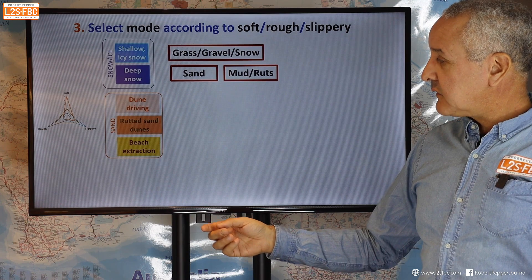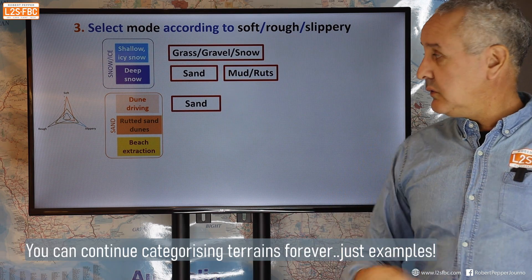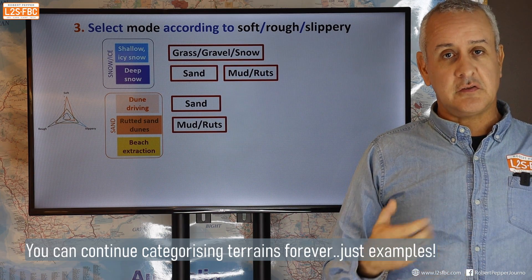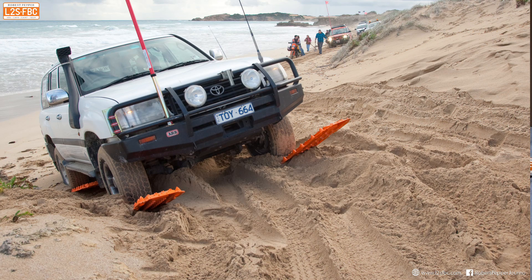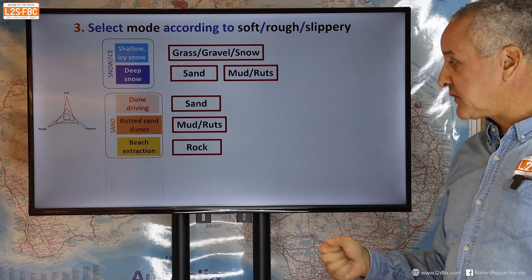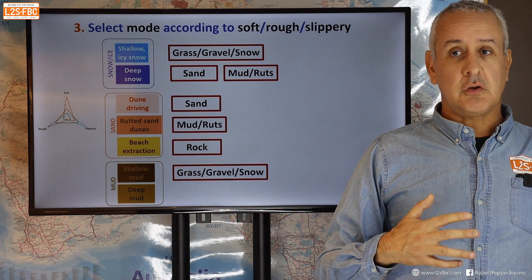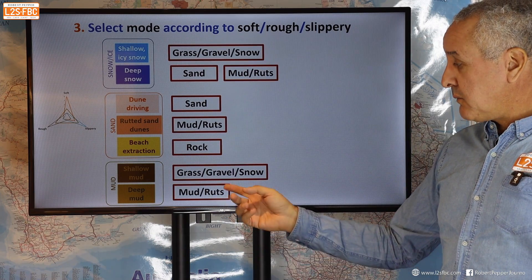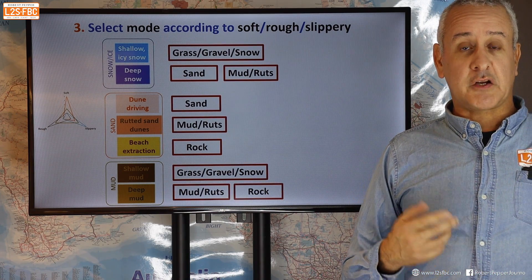For sand, there are at least three different types: deep soft sand going up and down dunes — definitely use sand mode, that's what it's designed for. Rutted sand dunes with scallops, dig-outs, and ruts — mud and ruts mode is probably more appropriate. Extracting your vehicle very slowly using max tracks on a beach — you might want rock mode, to get everything tight and locked up, minimizing wheel spin. For shallow mud, grass/gravel/snow may be appropriate since it's more akin to a slippery surface. In deep mud, go for mud and ruts, or possibly even rock mode, because you need power and maximum BTC tightness.